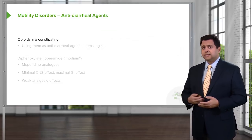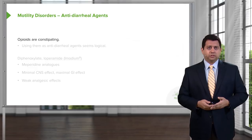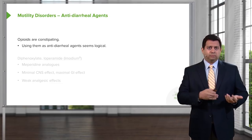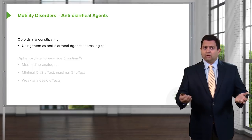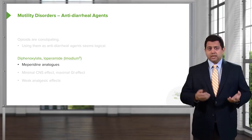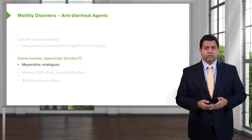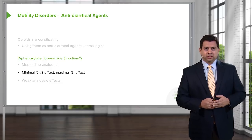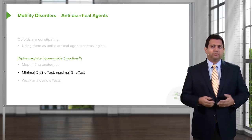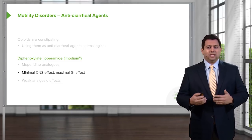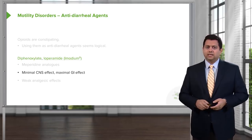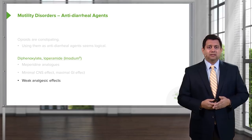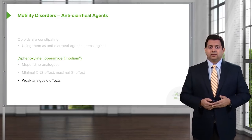Now, opioids are constipating, and we can actually use opioids as anti-diarrheal agents. However, we don't want to use strong opioids. We have an agent that is a weak opioid — commonly sold as Imodium — which is an analog of meperidine. It has minimal central nervous system effects and maximum GI effects. Originally released as a pain control agent, the GI effects were so pronounced that it was repurposed for diarrhea. Imodium is probably the number one selling over-the-counter anti-diarrheal agent.